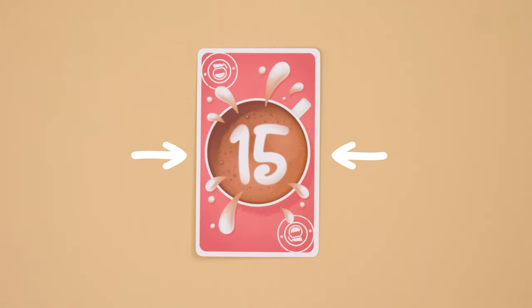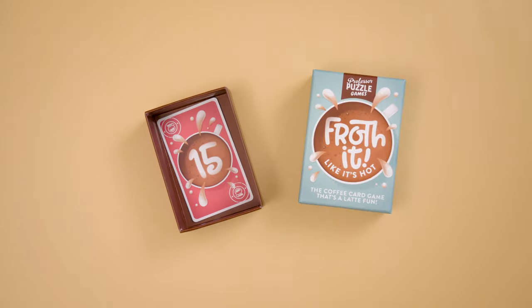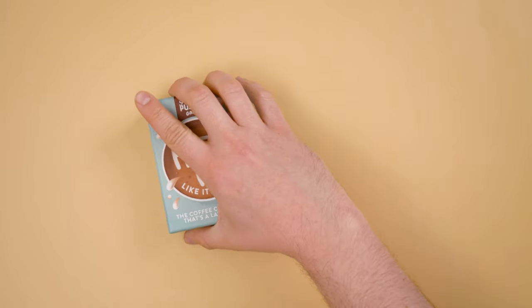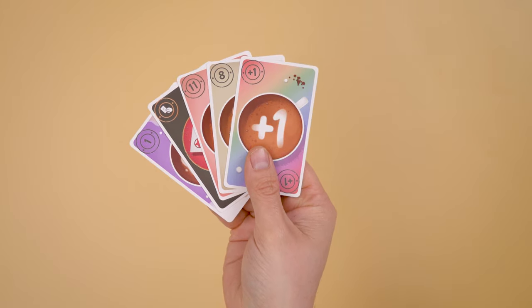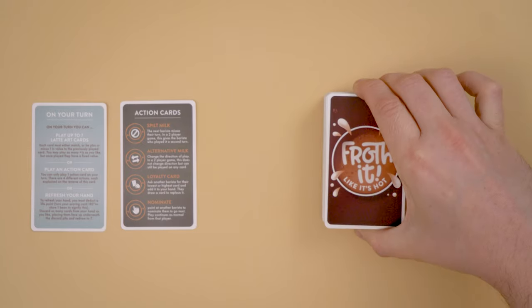This card is used for a couple of things: it can be played as the number 15, and the coffee pot symbol is your refill token. More on that later. Return any of the remaining 15 cards to the box. Shuffle the game cards and deal seven to each player. Create a face-down draw pile with the remaining cards.